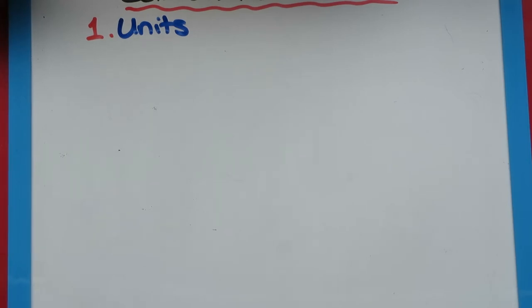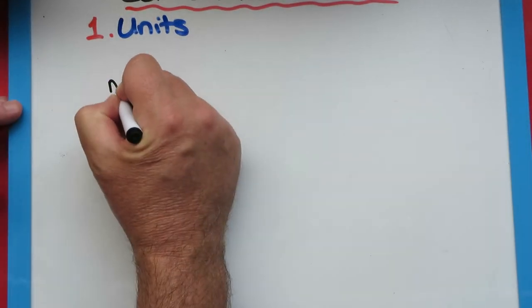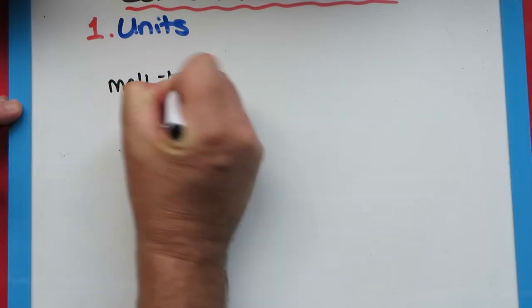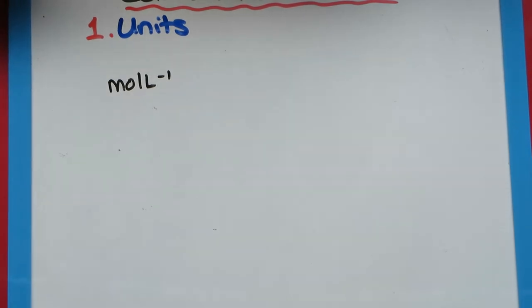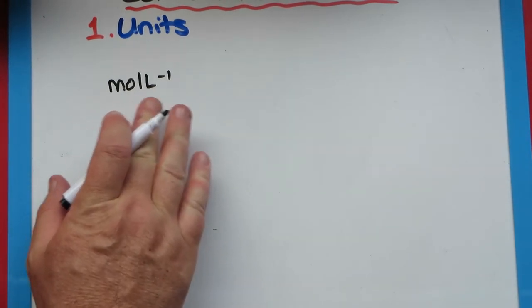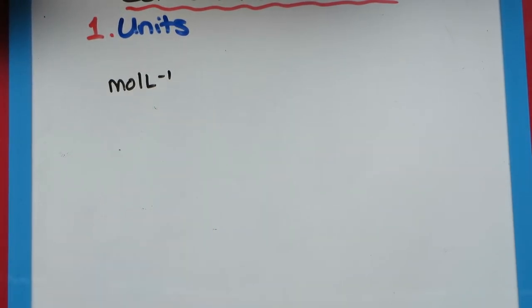As chemists, we usually use the unit moles per liter. This is what we use in chemistry—the number of moles or amount in a liter. You might not have a liter, but that's how many moles would be in a liter. In my next video I'll go through how we work out how to make a solution of a desired moles per liter concentration.